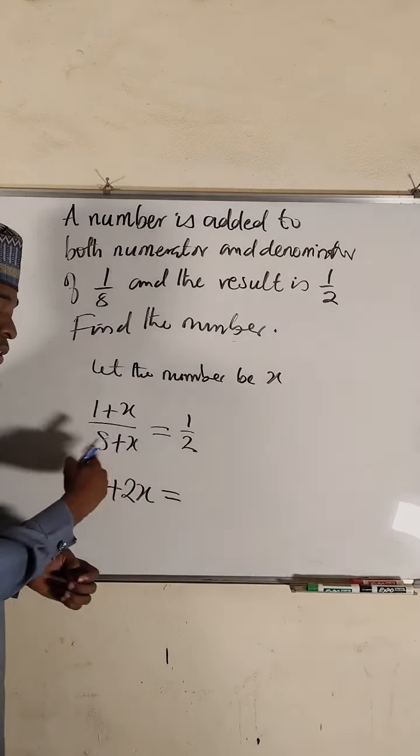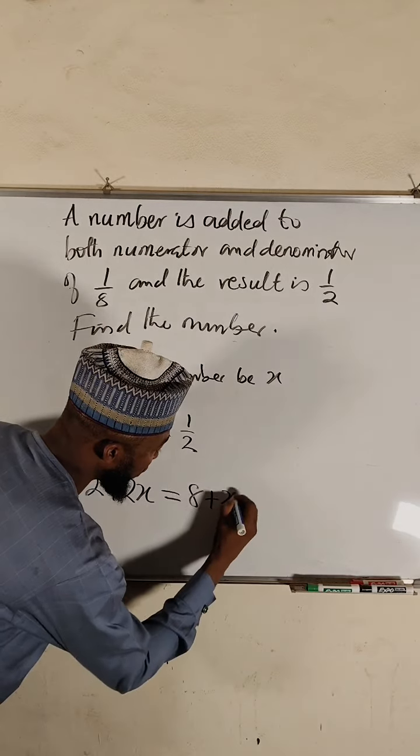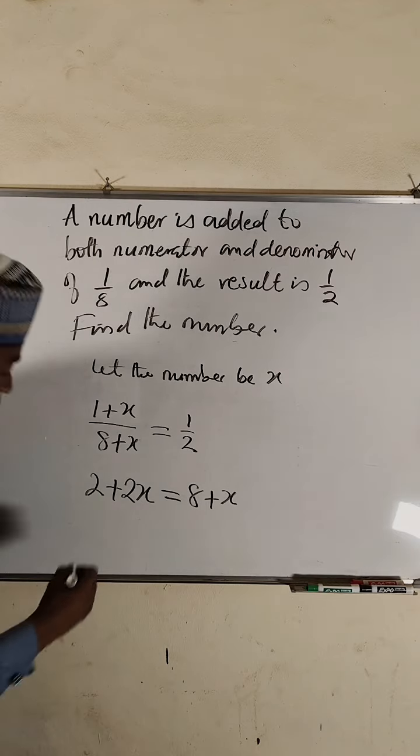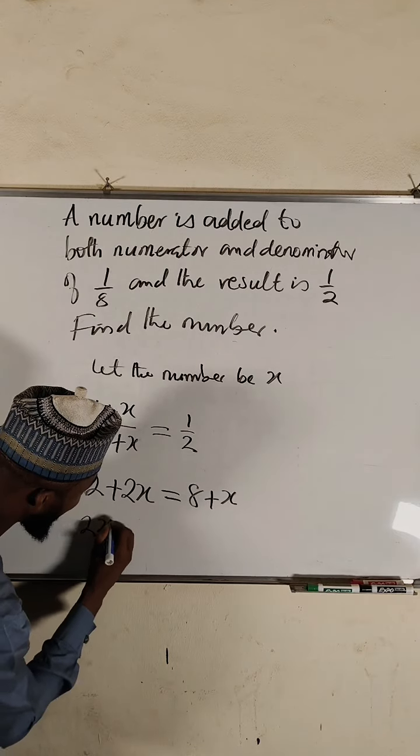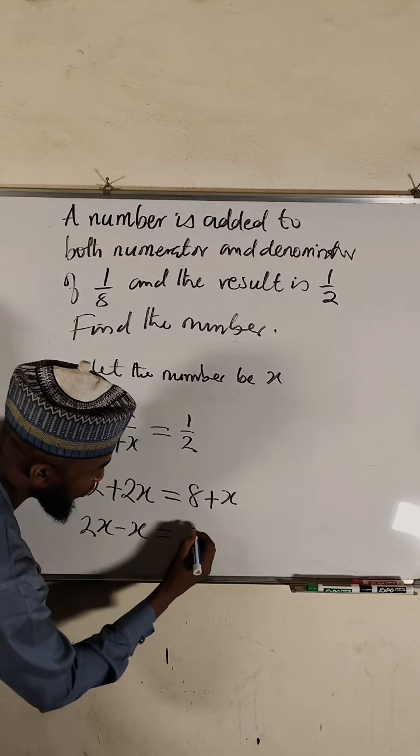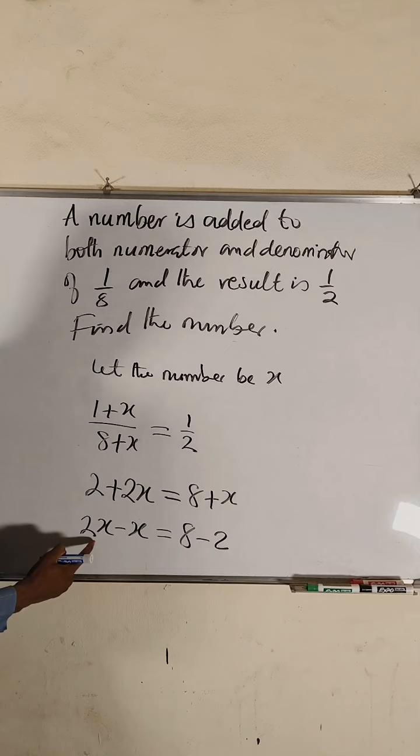Equals one multiplied by eight plus x, which will not change it. We collect the like terms, bring this one backward, take two to the other side. We have two x to the left. As x crosses over it becomes negative.